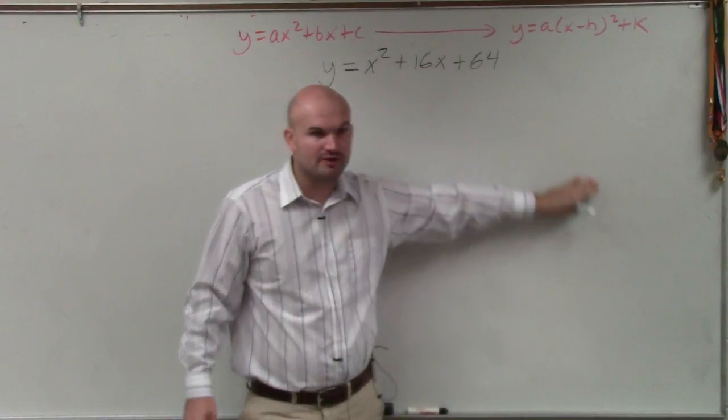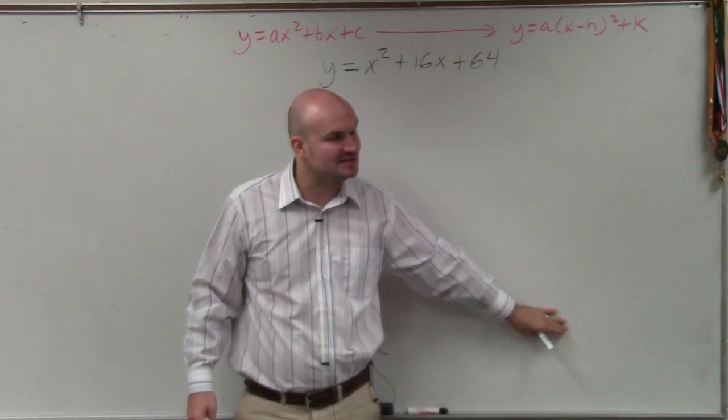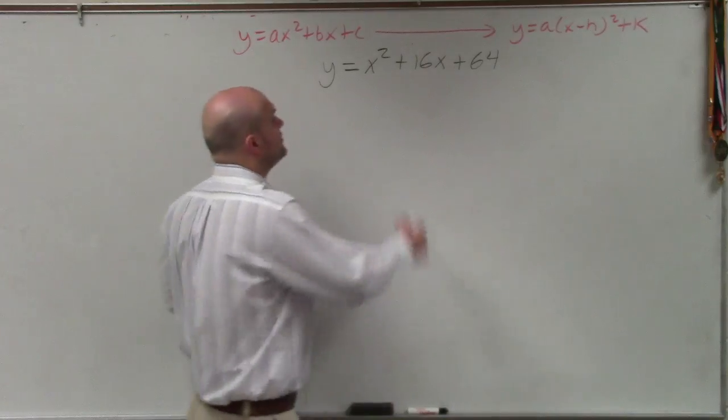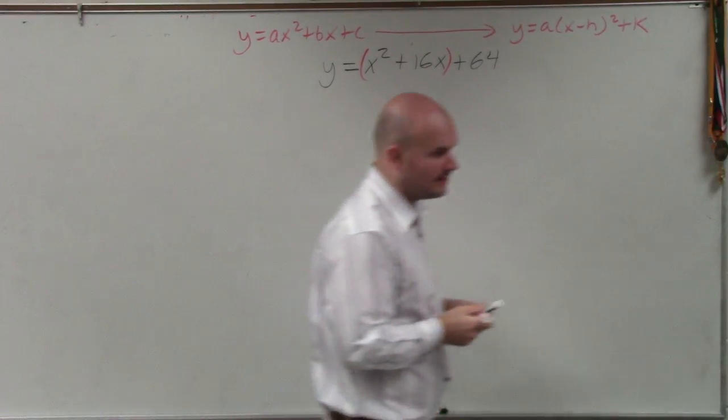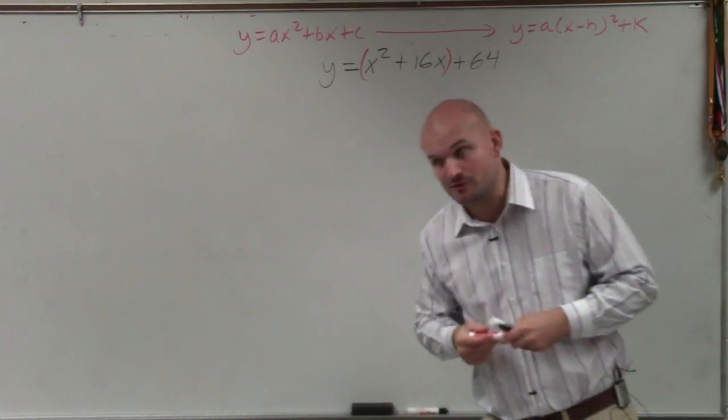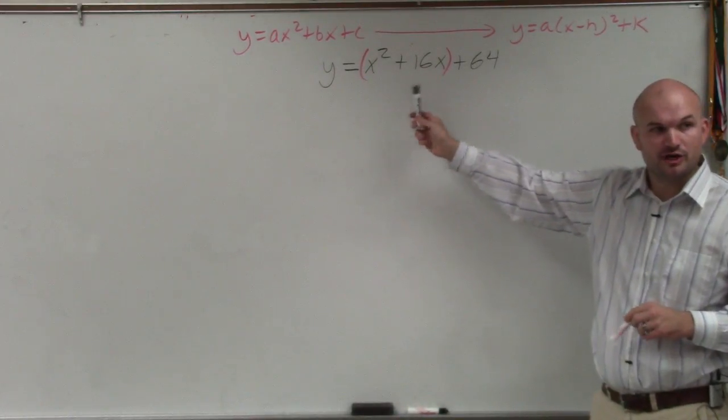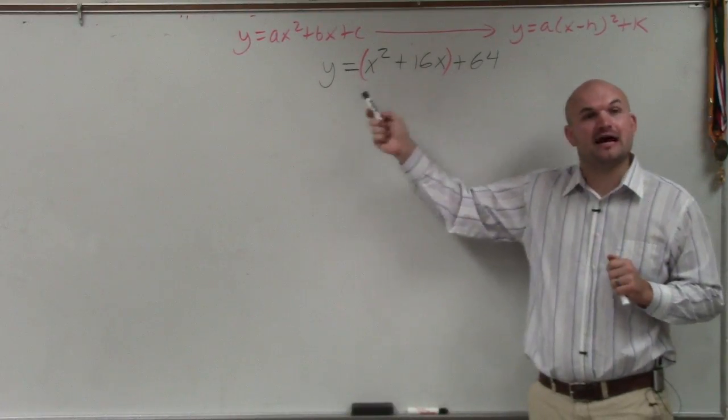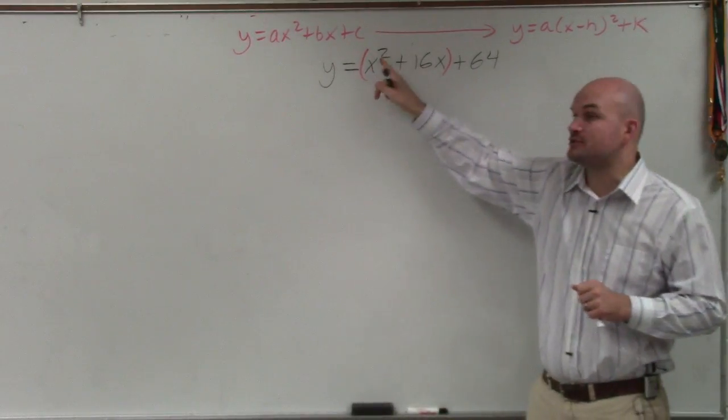And basically, you guys hopefully wrote down those steps that I had. I'm not going to rewrite them down because it's going to take a little time, but I will say them out loud and basically follow the process. The first thing you do is you group the first and the last term. So if you didn't do this problem, I'd highly recommend that you write this down step by step. The second thing is we factor out a common factor if a is not equal to 1. So a is your coefficient of your x squared.